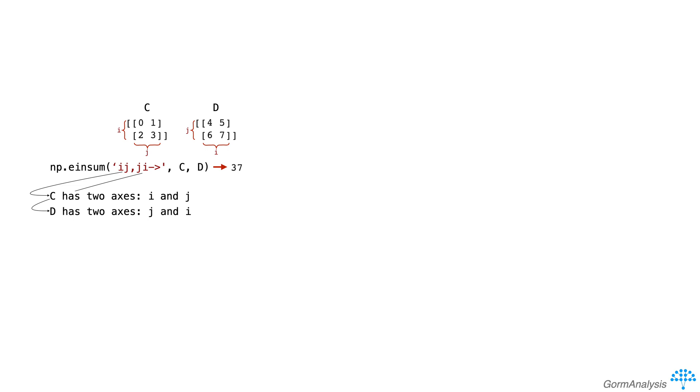Now also, the length of its first dimension matches the length of the first array's second dimension, since they both use subscript j, and the length of its second dimension matches the length of the first array's first dimension, since they both use subscript i. The bit after the arrow is empty, so we know the output will have 0 dimensions, and thus will be a scalar.